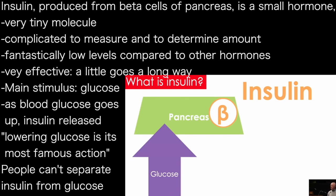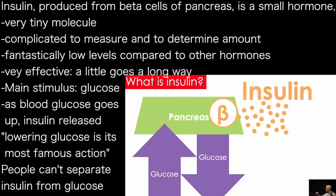The primary stimulus for insulin to be released is glucose. As blood sugar levels or blood glucose go up, insulin will be released. This is the most famous interaction with insulin, and its primary action is to lower glucose. Though I'll say I don't love framing it that way — lowering glucose is insulin's most famous action, but that's almost part of the problem. I'll change the paradigm in a moment.